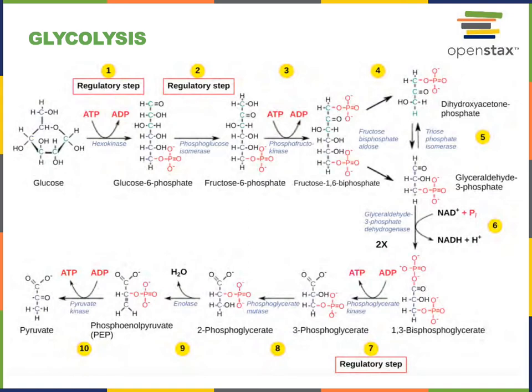The second step is catalyzed by phosphoglucose isomerase. The third step is another phosphorylation reaction that converts fructose-6-phosphate to fructose-1,6-bisphosphate, catalyzed by phosphofructokinase, and consumes another ATP molecule.